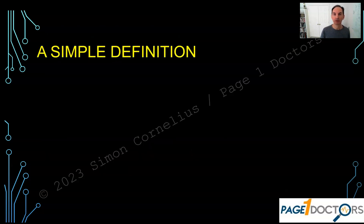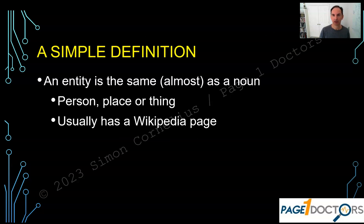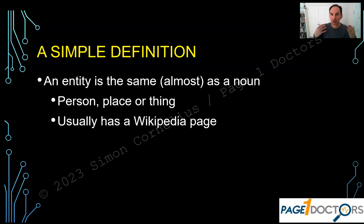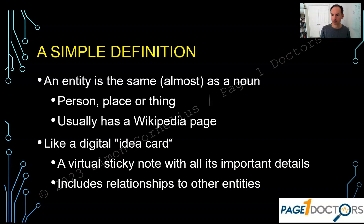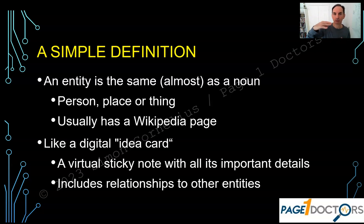Let's have a simple definition of an entity. It is the same as — in quotes — a noun. There are some entity purists who will disagree with me, and I will concur with their opinion. But an entity and a noun for this demonstration are pretty much one and the same thing. It's a person, a place, or a thing. And if it has a page in Wikipedia, it's usually an entity. Think of an entity as equivalent to a noun, like a digital idea — kind of like a sticky post-it note — where you have information about the entity, in what's called an entity card.